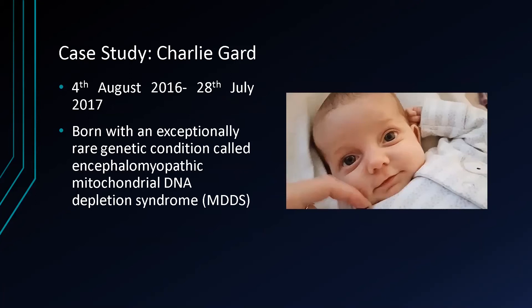Now we will be looking at our case study involving a young boy named Charlie Gard, who was born on the 4th of August 2016, but was exceptionally aware of a genetic condition called Encephalomyopathic Mitochondrial DNA Depletion Syndrome, or MDDS in short. Despite appearing perfectly healthy at first, his health soon began to deteriorate and he soon developed severe brain damage, in addition to being unable to open his eyes or move his arms or legs. This condition meant that he required the support of a ventilator, which would aid his breathing.